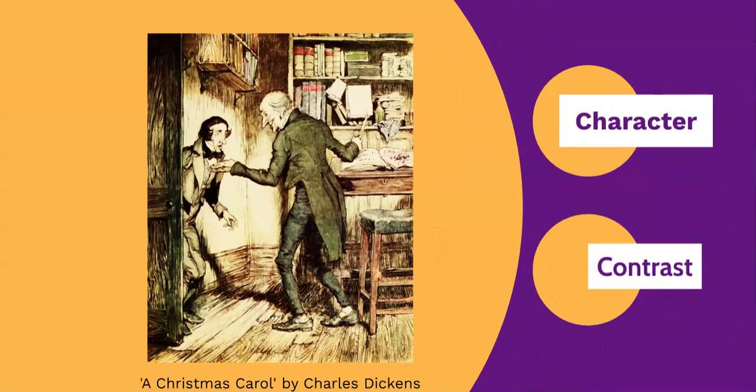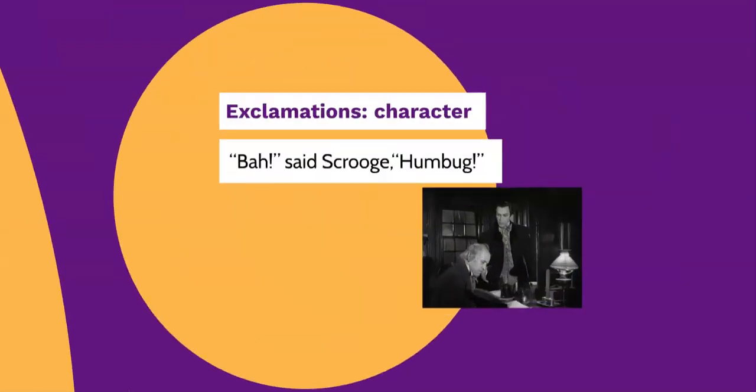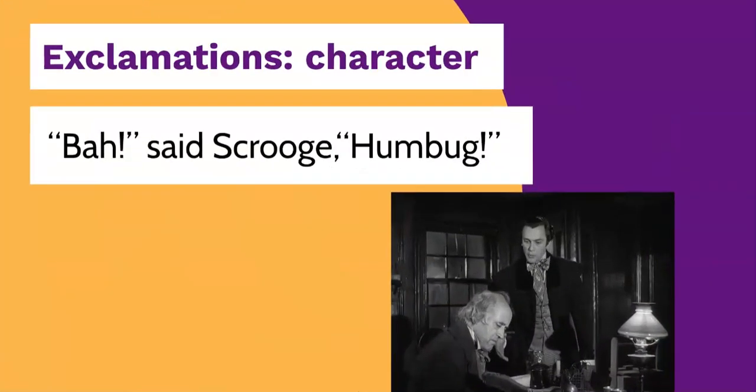Minor sentences can also be used in creative writing to provide information about character. These examples are from A Christmas Carol by Charles Dickens. In our first example, Scrooge is visited by his nephew Fred, who invites him to his house for Christmas dinner. 'Bah,' said Scrooge, 'humbug.' The exclamations 'bah' and 'humbug' are minor sentences. They show that Scrooge is incredibly rude to his only relation and he's not interested in his family at Christmas.